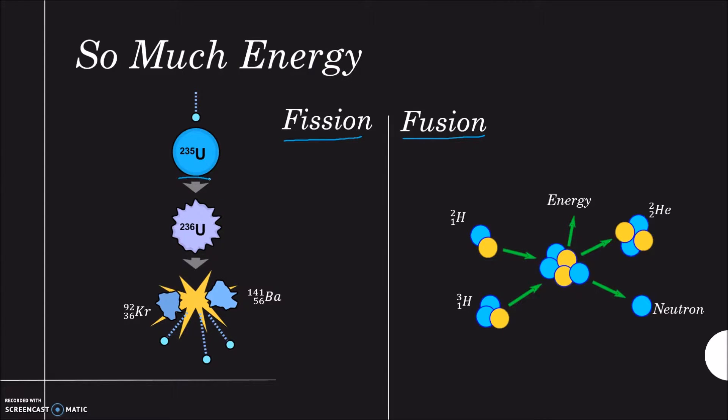For fission, we have one big atom, such as uranium-235, and we bombard it with a neutron. As a result, we get uranium-236, which is unstable and decays into two smaller atoms, in this case krypton and barium. As a result of the decay, it also produces free neutrons and a tremendous amount of energy, which is released as heat.